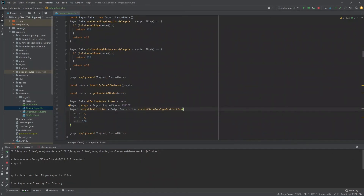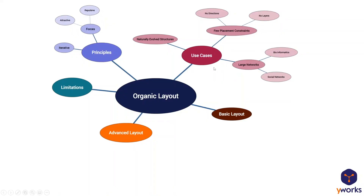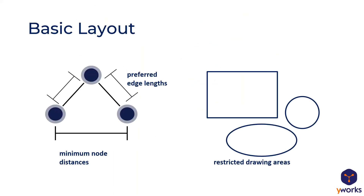That concludes the basic layout section. I hope you've learned how to use the organic layout in yFiles as a starting point for your own experimentation. The key concepts covered were: preferred edge lengths, minimum node distances, restricted drawing areas, and how to apply the layout incrementally by running it multiple times on subsets of nodes.